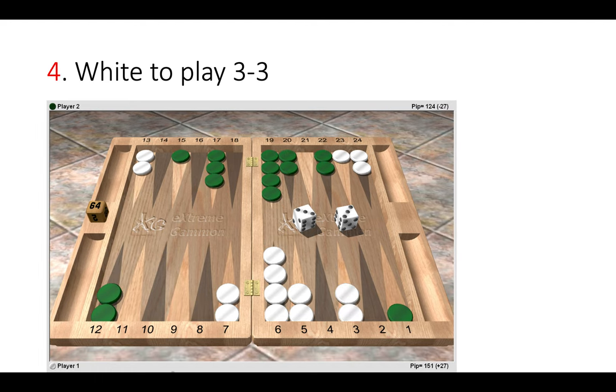And finally position 4. We have a double three to play. Now of course with doubles we have a lot more options because we can effectively move four checkers. So here we can easily miss things over the board. Now with double three of course there are lots of nice options. We can make the four point. We can make the ten point. We can make the twenty one point.